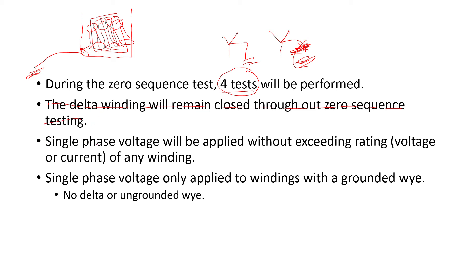Single phase voltage will be applied without exceeding the rating of any winding, because sometimes when the zero sequence test is performed, if you exceed the rating of any of the windings you are going to overheat the tank and cause problems. And you will see in some examples that I'm going to provide with test information, the current really goes up very quick. So that's another thing manufacturers do: they make sure that they do not exceed the ratings of any of the windings.